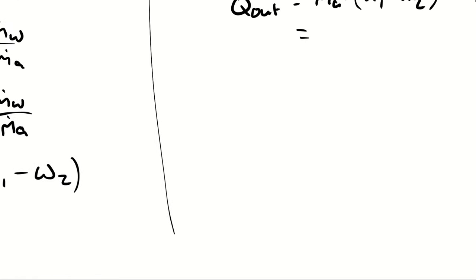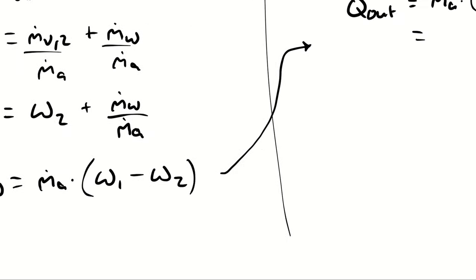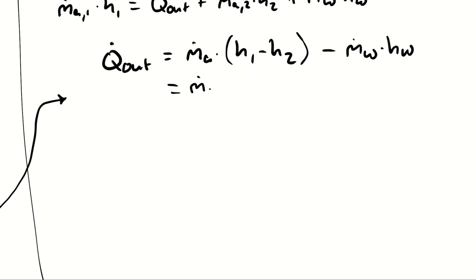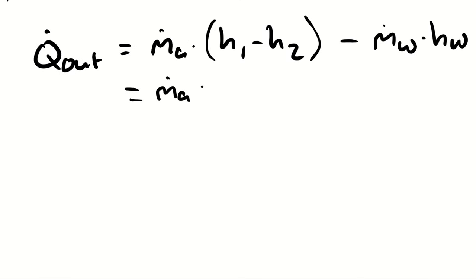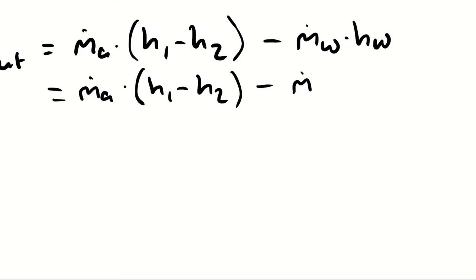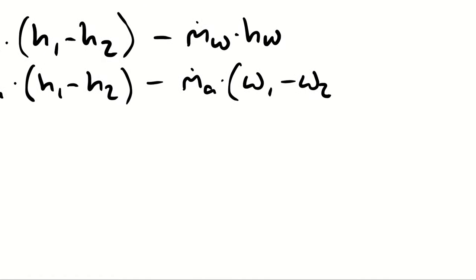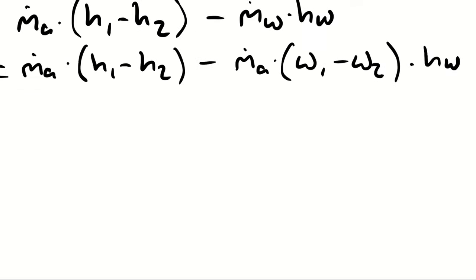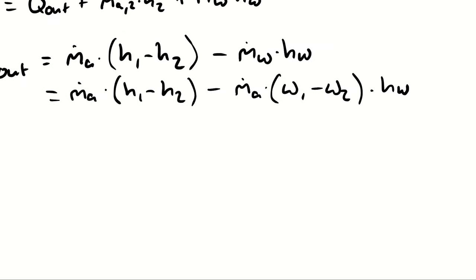Plugging in my representation of ṁ_W in terms of ṁ_A and (ω₁ minus ω₂), I have Q̇_out equals ṁ_A times [(h₁ minus h₂) minus (ω₁ minus ω₂)·h_W]. ṁ_A can be factored out further, and is calculated by taking the volumetric flow rate divided by the specific volume.